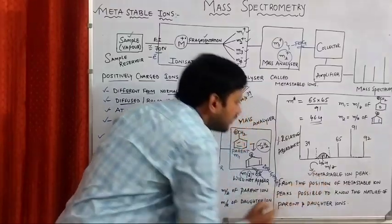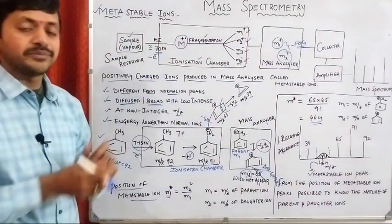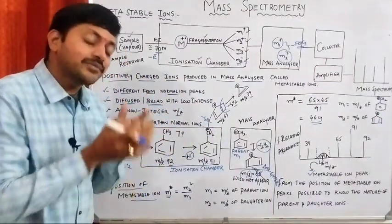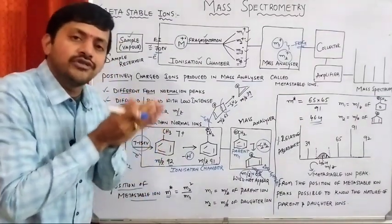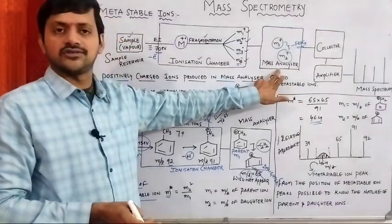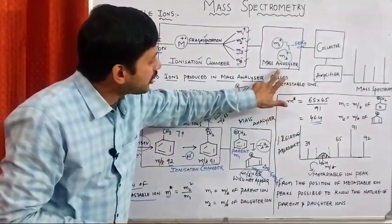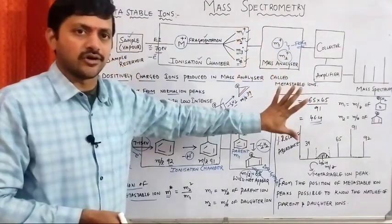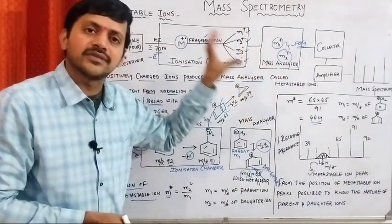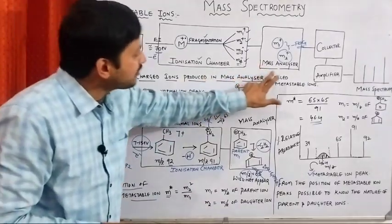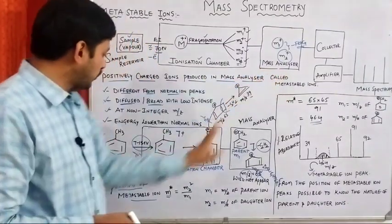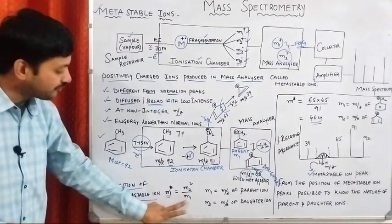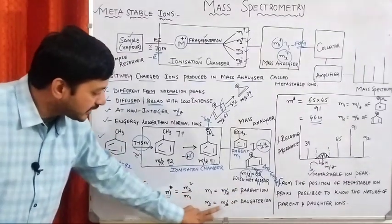During the ionization and fragmentation process, the generation of new ions sometimes takes place in the mass analyzer. Ions produced in the mass analyzer are commonly called metastable ions. These are positively charged ions, different from normal ions, and their m/z value is calculated using the formula m* = m2² / m1, where m1 is the m/z of the parent ion and m2 is the m/z of the daughter ion.